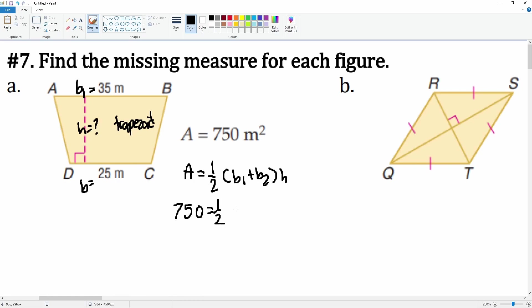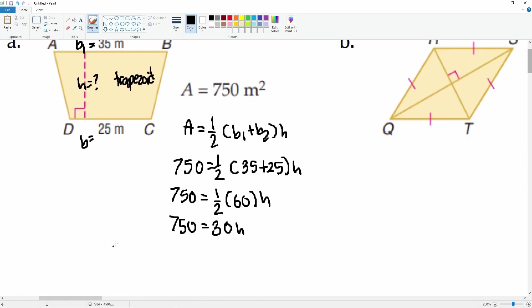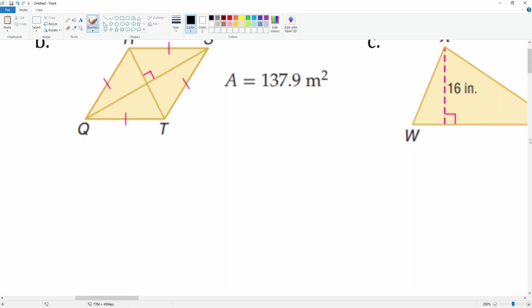We can plug into the formula. The area is 750 = 1/2(35 + 25)h. We have one variable with one unknown, so we can solve for it. Let's simplify what's inside the parentheses first: 35 + 25 = 60. We have 1/2 times 60, which simplifies to 30. Now we have 750 = 30h. Divide by 30 from both sides: h = 25. That is the height. For part b, we have a rhombus.